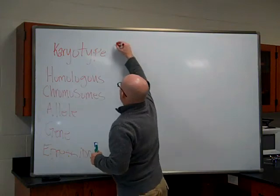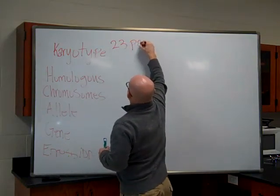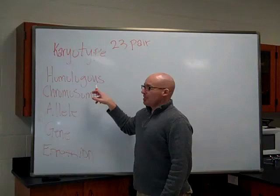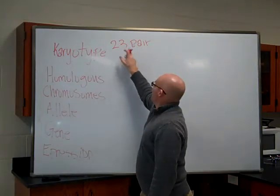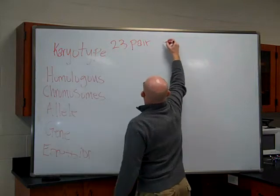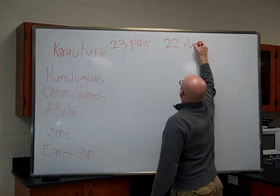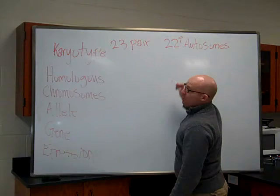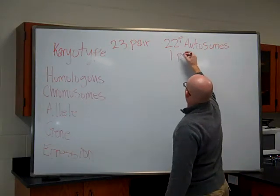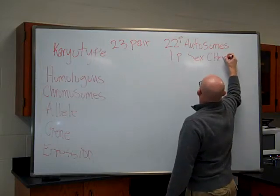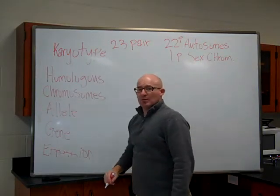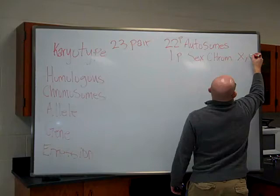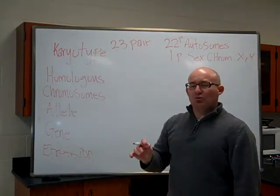With humans, we have 23 pairs of chromosomes — 23 pairs of homologous chromosomes. You have 22 pairs of what we call autosomes, and one pair of sex chromosomes. When we talk about the sex chromosomes, they are X and Y.